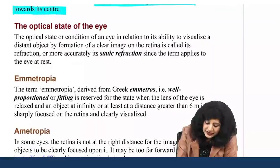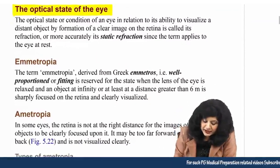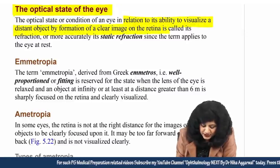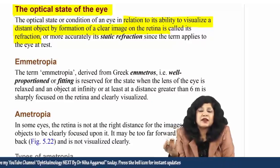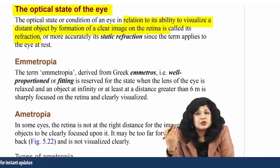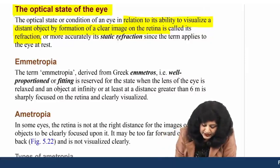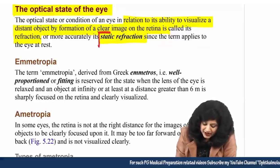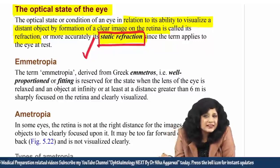The optical state of the eye refers to the condition of the eye in relation to its ability to visualize a distant object by forming a clear image on the retina — this is called refraction. The optical state means whether the eye is emetropic, hypermetropic, or myopic, and is also called static refraction because it is always studied with the accommodation at rest.